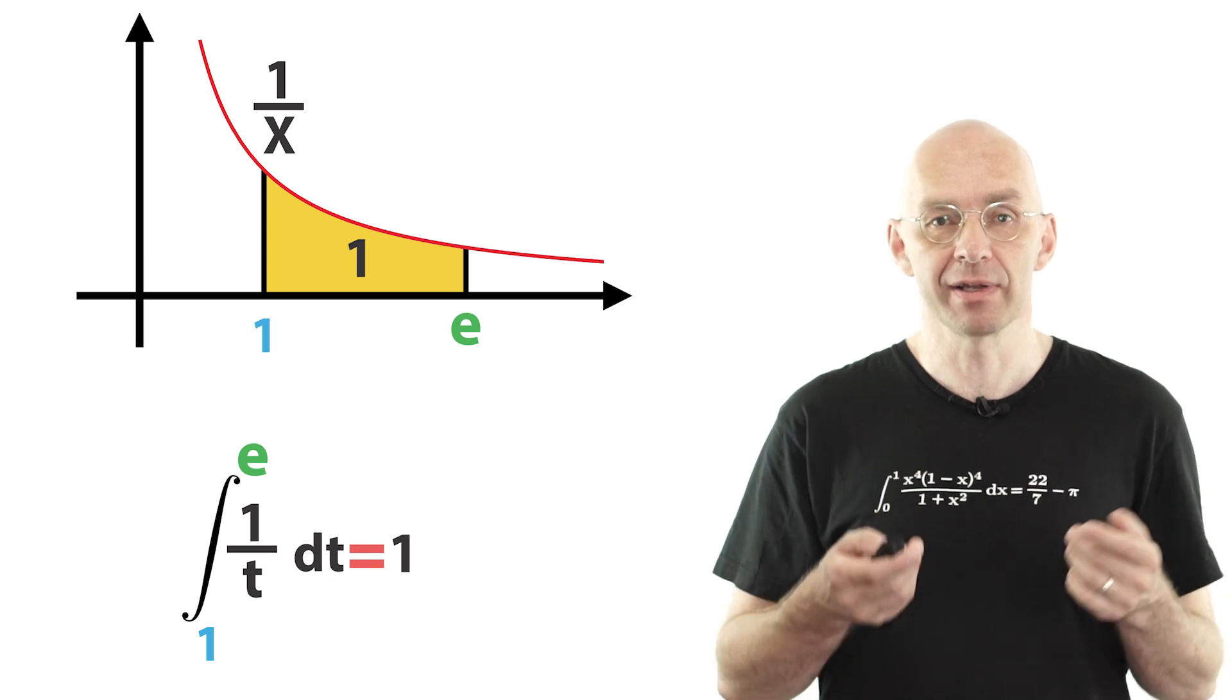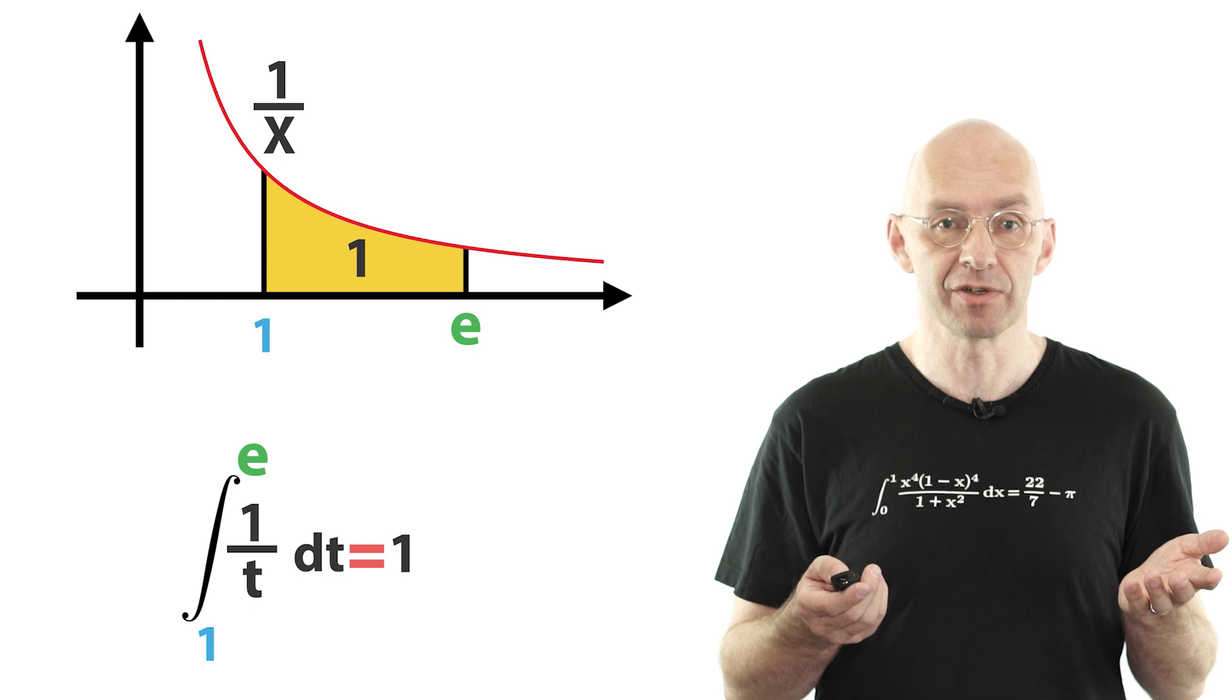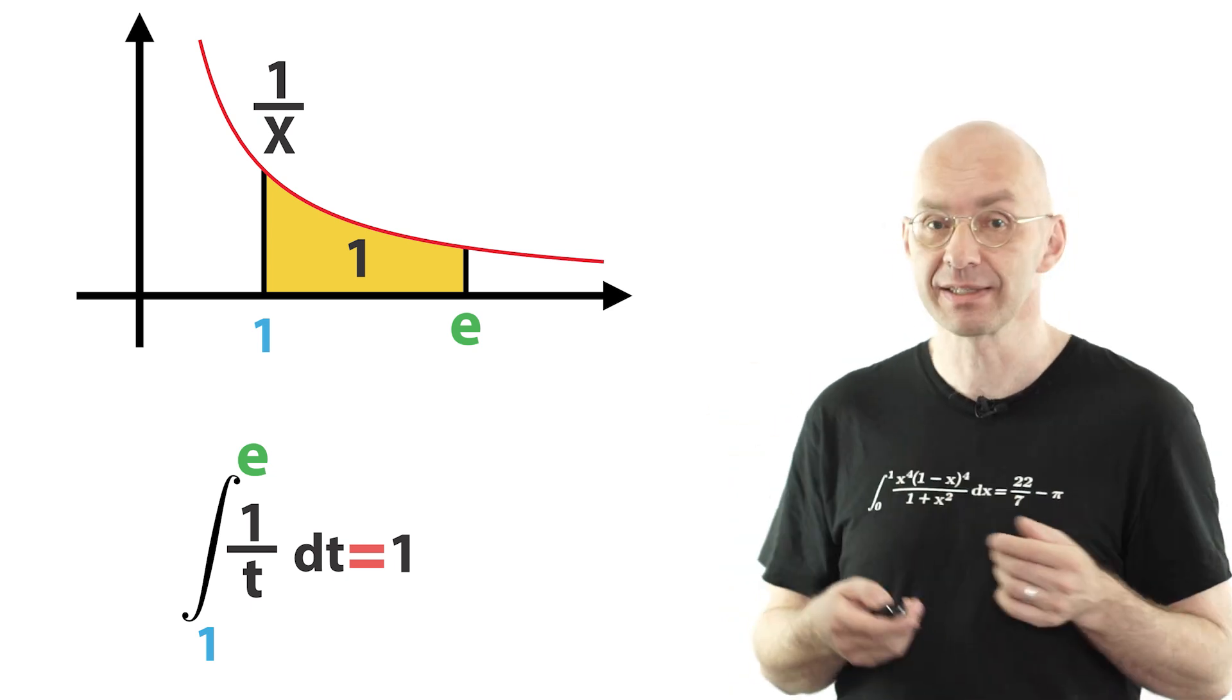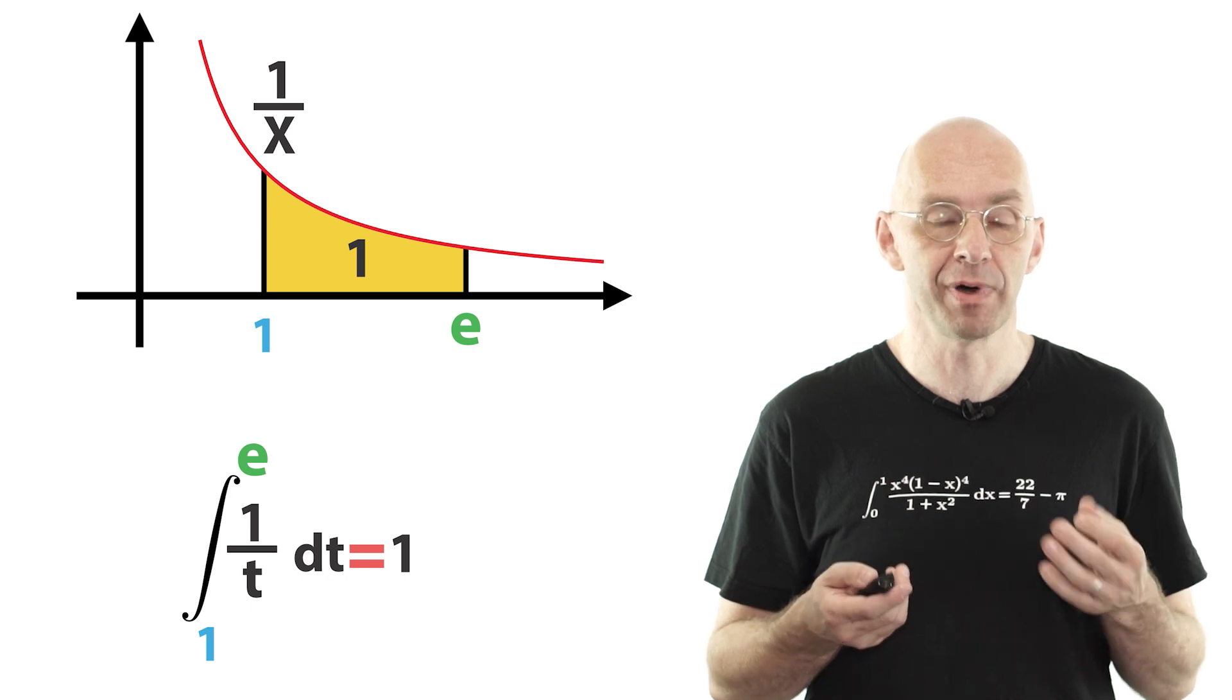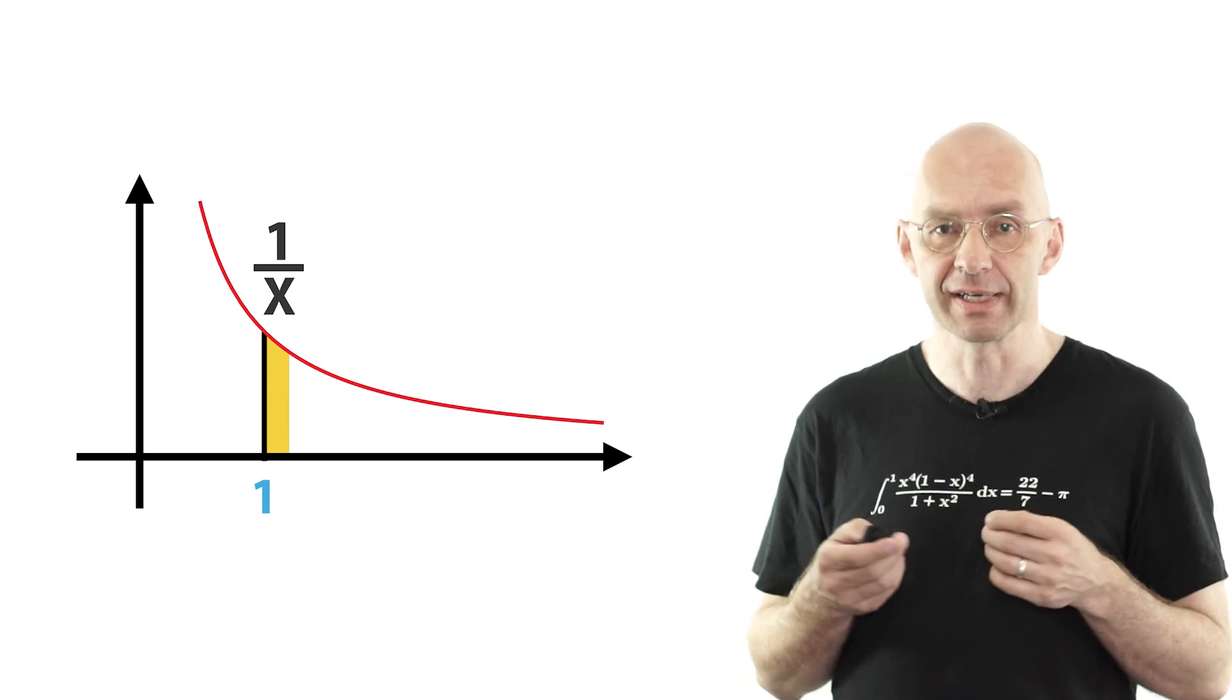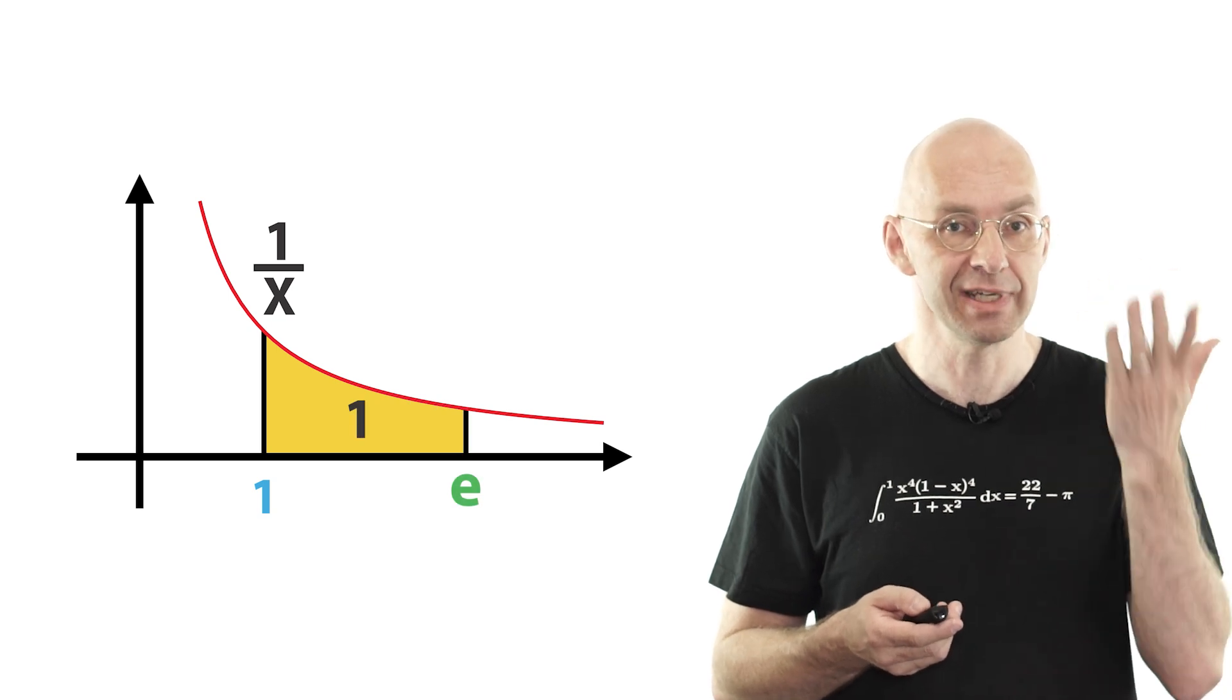Now, many people are under the impression that, unlike π, e does not have a nice geometric interpretation. Well, here we've got one, right? In terms of the hyperbola, which is both the graph of 1 over x and a basic geometric shape closely related to π's circle. This is the way to remember it. Open up this yellow curtain here under the hyperbola until its area is exactly 1 and you've found e.